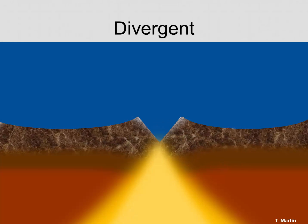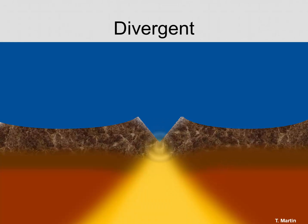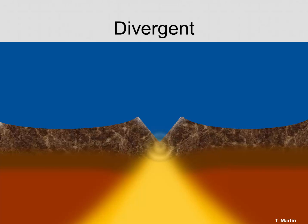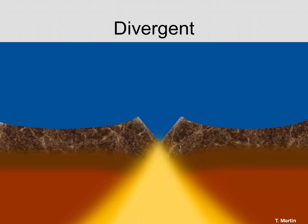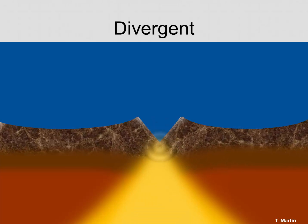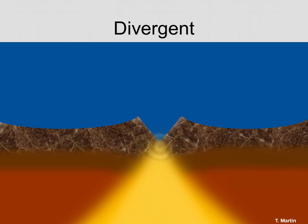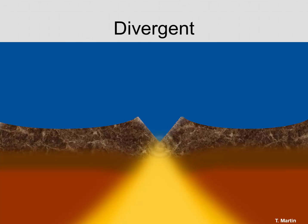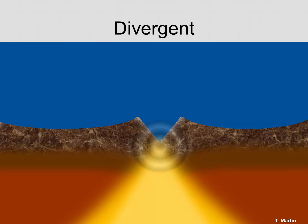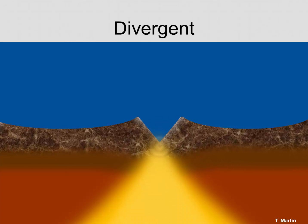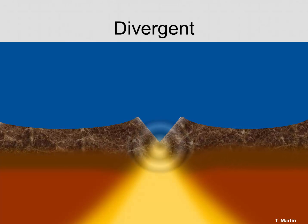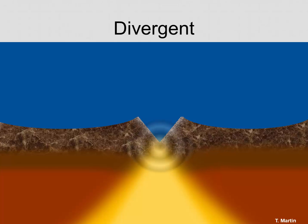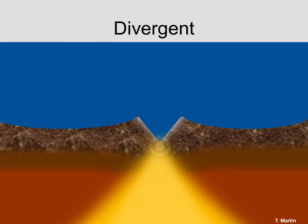The first of the three motions is divergent motion. This occurs when magma comes up from deep within the earth. This typically happens in the middle of the ocean, generating earthquakes as the plates move apart from each other. This may also happen on continental plates as well.